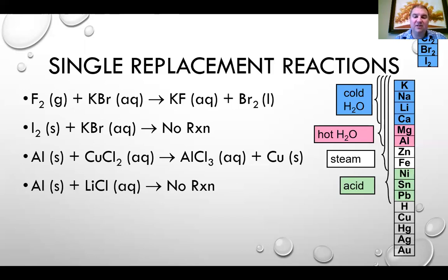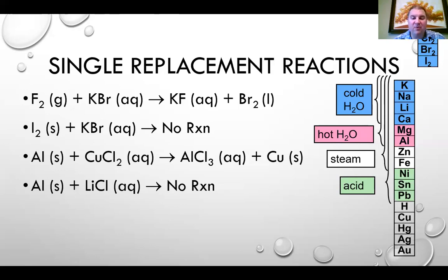Magnesium and aluminum can replace hydrogen but only in hot water. Potassium, sodium, lithium, and calcium can also replace hydrogen in hot water. All of those plus zinc and iron are able to replace hydrogen in steam. Nickel, tin, and lead are only able to replace hydrogen when it's in an acid.